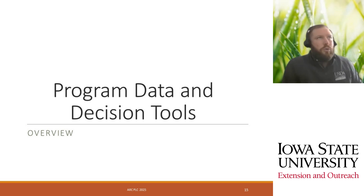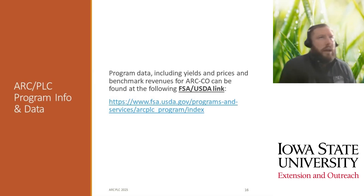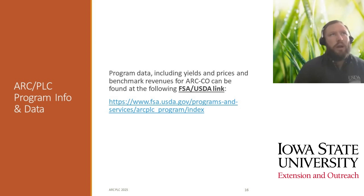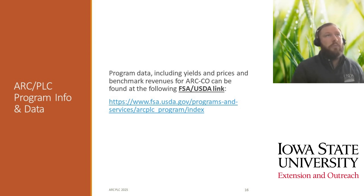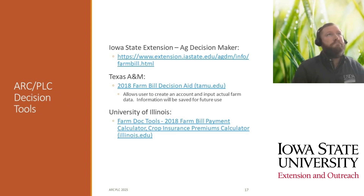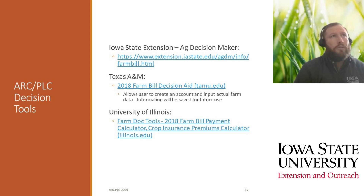For program data and decision tools, folks can head to the USDA ARC PLC data link provided in the slide. It has all program data including yields, prices, and benchmark revenues, broken down by state and county, so you can drill down to see exactly how benchmark revenues have been updated from year to year. Additional decision tools are available through ISU Extension's Ag Decision Maker, Texas A&M's farm bill decision tools, and the University of Illinois.